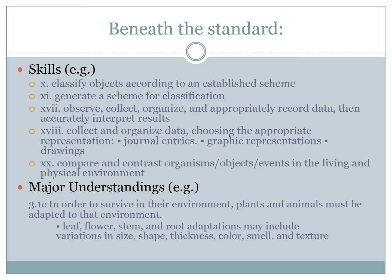The major understandings are listed below the skills. For example: in order to survive in their environment, plants and animals must be adapted to that environment. And specifically, the standard states that leaf, flower, stem, and root adaptations may include variations in size, shape, thickness, color, smell, and texture. So, for example, you might show pictures of different kinds of leaves — some that are broad, a cactus spike, a palm leaf shaped differently — and teach children that the leaves' shape and color result from their environment. You could also assess that with a simple diagram: which of these leaves is likely to be in the tropics? Which is likely to be in a desert?